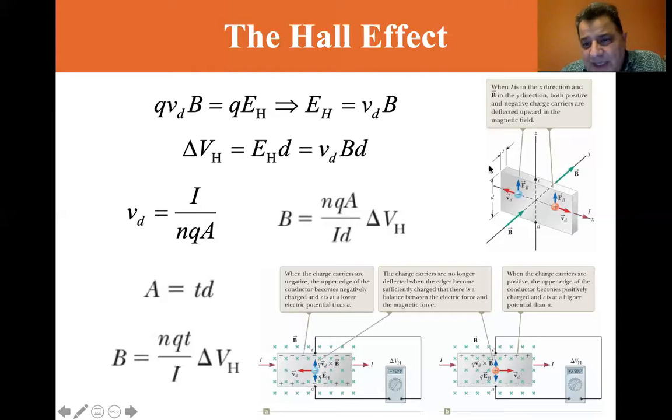The voltage is equal to E_H times d, where d is the height of the block, this conductor. Voltage is equal to E times distance. So we substitute v_d B for the E_H and you get delta V_H is equal to v_d B d, where d is this distance again.